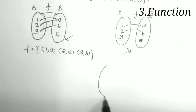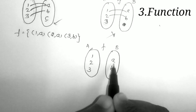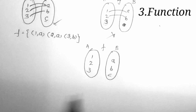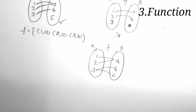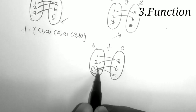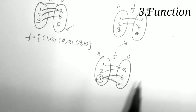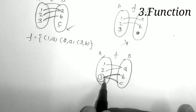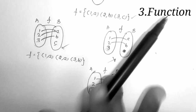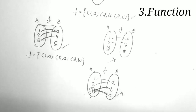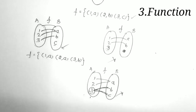One more example: A = {1, 2, 3} and B = {a, b, c}. If 1 is connected to a, 2 is connected to a, and element 3 is connected to both b and c, then this is NOT a function. The condition is that each element of A must be connected to a unique single element of B. Since 3 is connected to two elements, this is not a function.